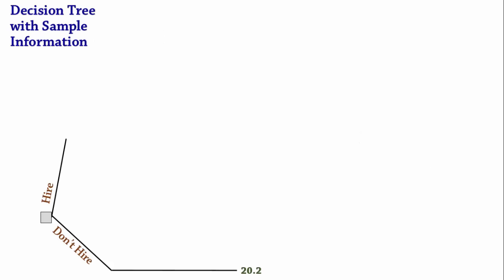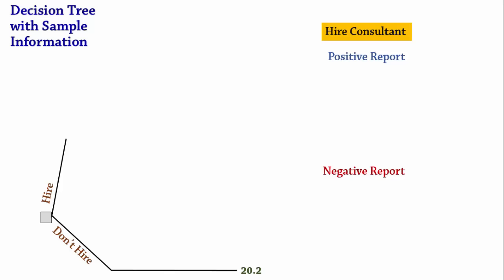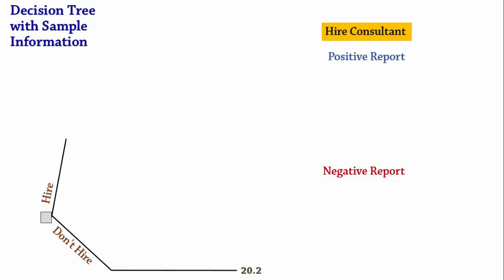Here is a reduced version of the decision situation. Suppose if we hire the consultant, he or she could give a positive or negative report about economic conditions. This report from additional information is often referred to as prediction, forecast, or result. Suppose the probability of the consultant giving a positive report is 0.44, which means the probability of a negative report is 0.56. Since these are probabilities, we represent them using a chance node with positive and negative branches.